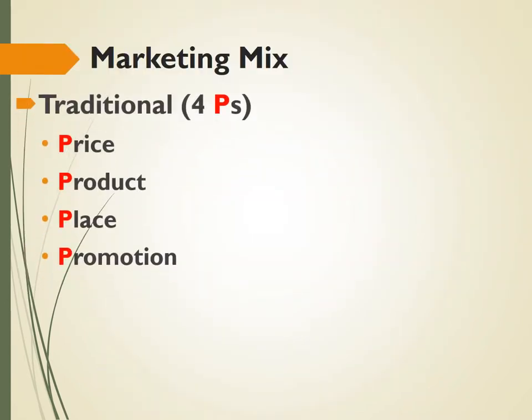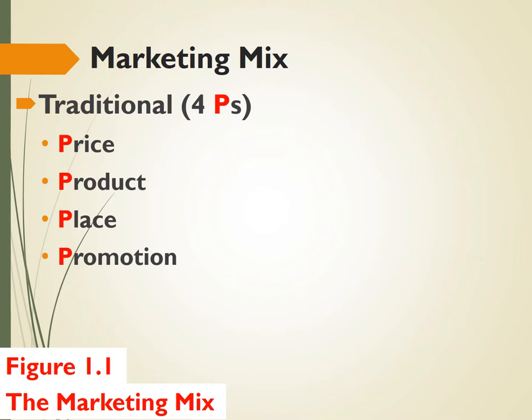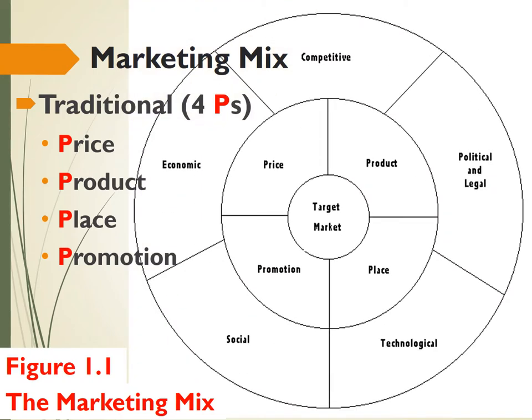The traditional model of marketing, called the 4Ps model, is based on the idea of selling a product or a good to a particular target market or area. This particular model focuses on the 4Ps of product, price, place, and promotion. Here is the depiction of the model as shown in your text. It does demonstrate that external factors have an impact on those four areas, which then impact the target market that you're trying to reach.